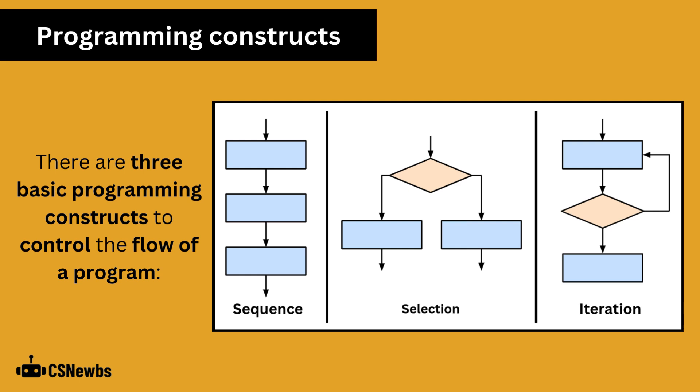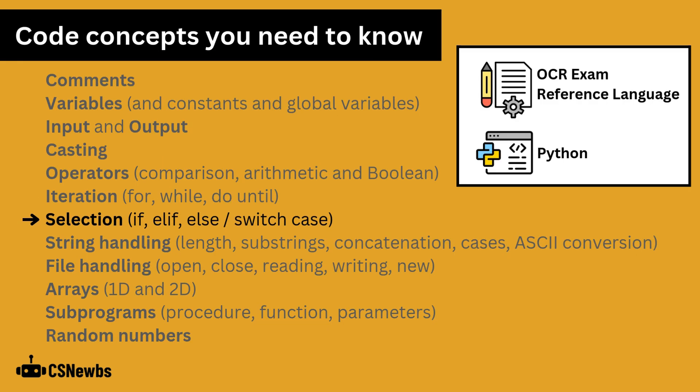There are three basic programming constructs to control the flow of a program. Selection refers to making decisions. There are two main methods of using selection to make decisions that we will look at in both OCR-ERL and Python.